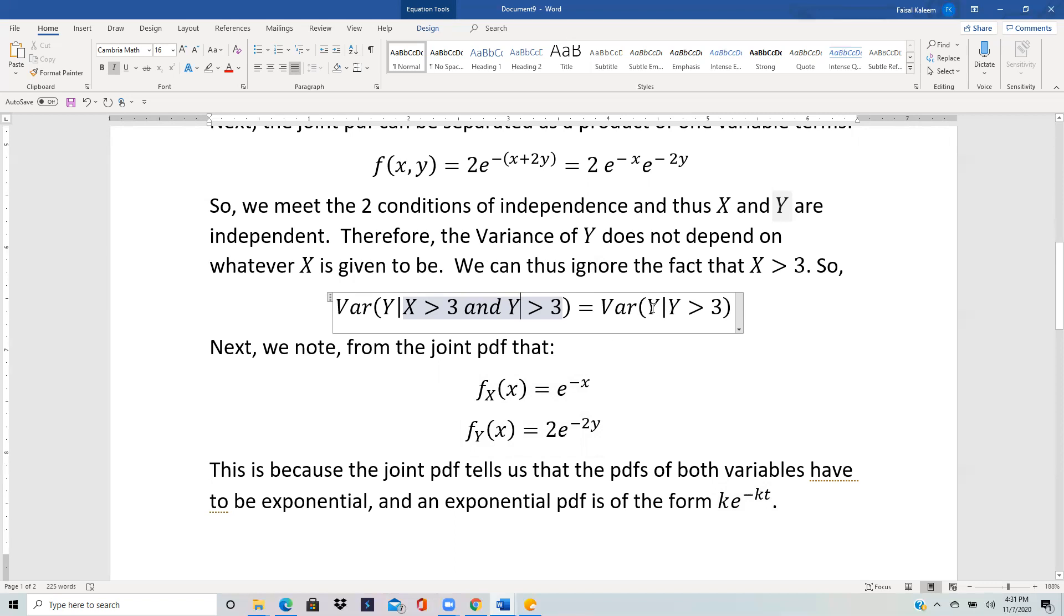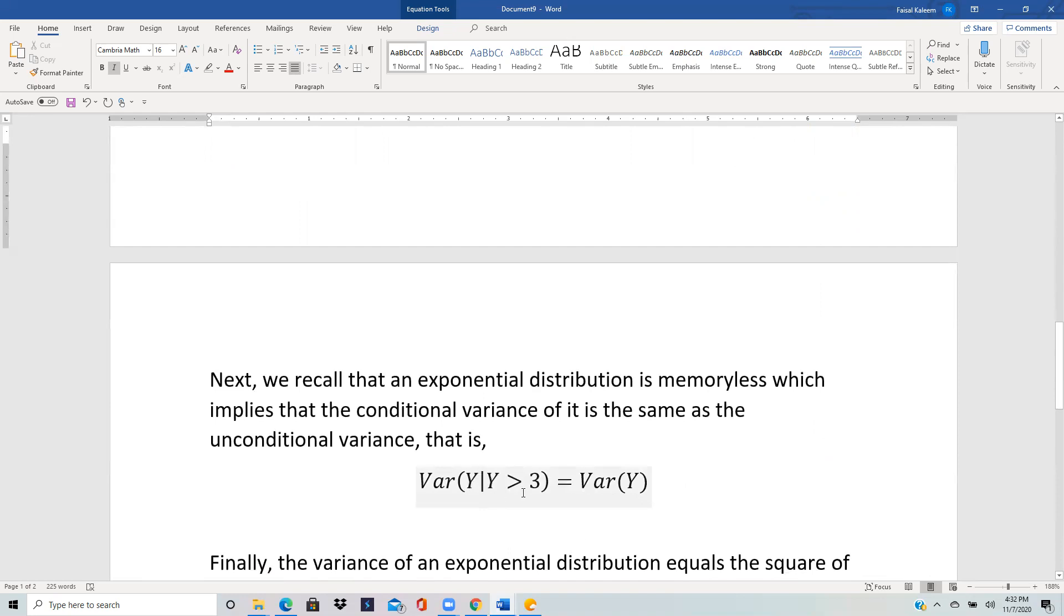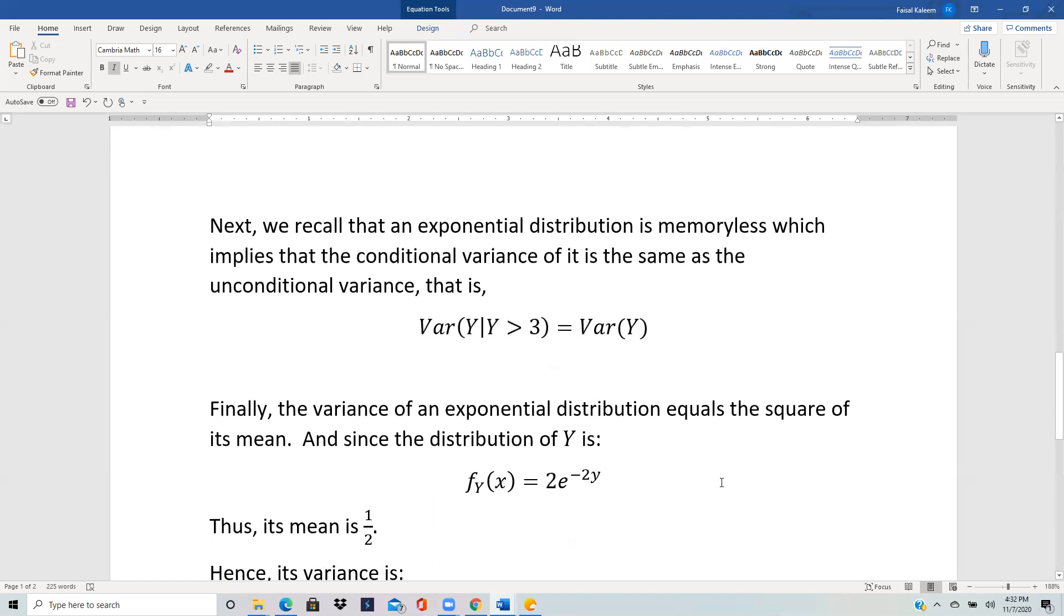So we are just interested in y because we want variance of y given y greater than three and the next nice thing is that exponential distribution is memoryless. And it has a few implications and the implication that we need over here is that the conditional variance of an exponential distribution is the same as the original variance without any condition. So in other words the variance of y given y greater than 3 is just the variance of y and again this is only because y is exponential. Whenever y is exponential this kind of thing will always hold, this would also hold if you had y less than 3 here. So basically variance of y given y greater than a or y less than a is the same as variance of y as long as y is exponential.